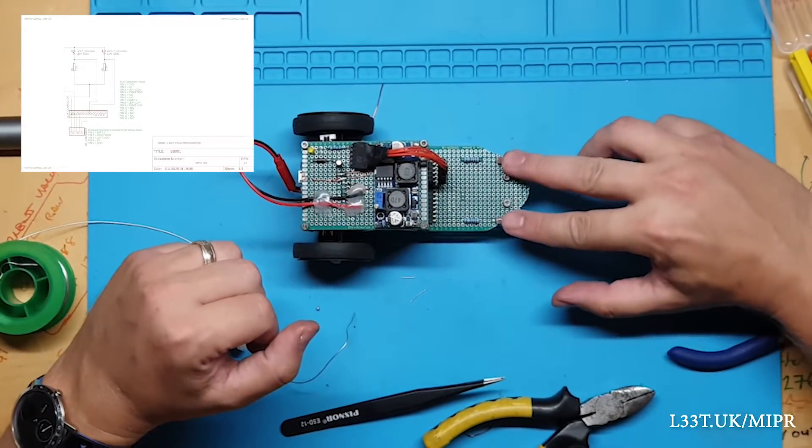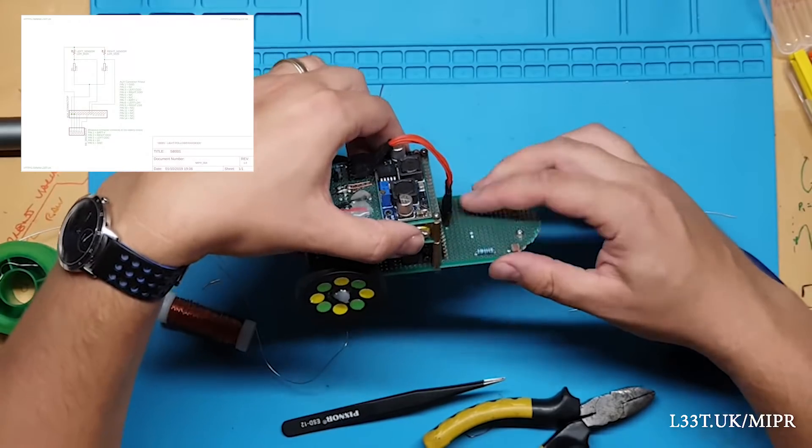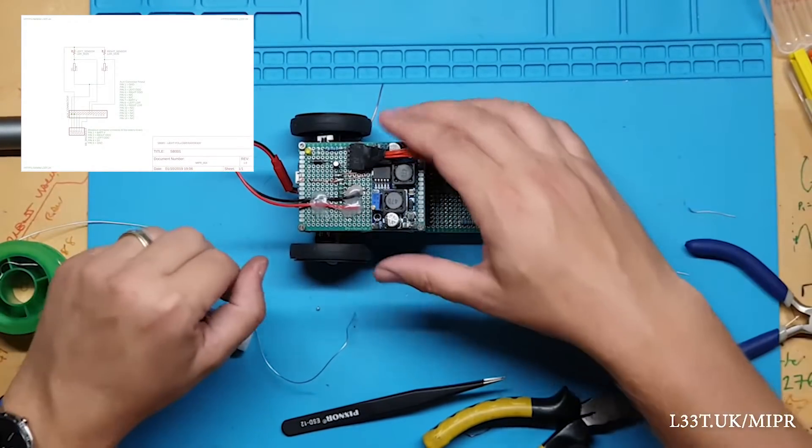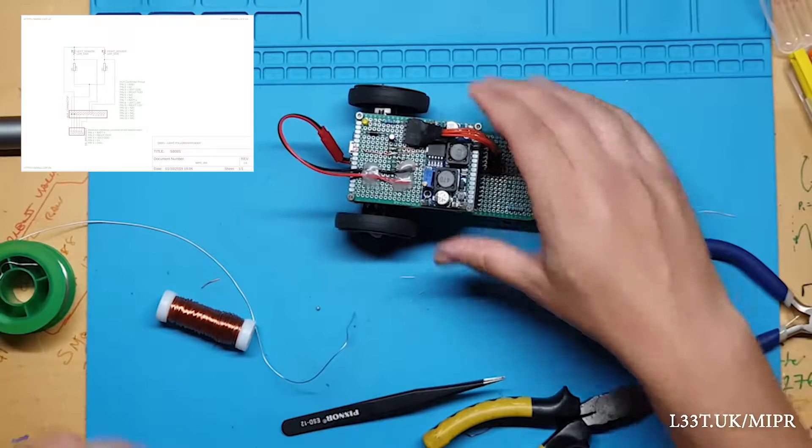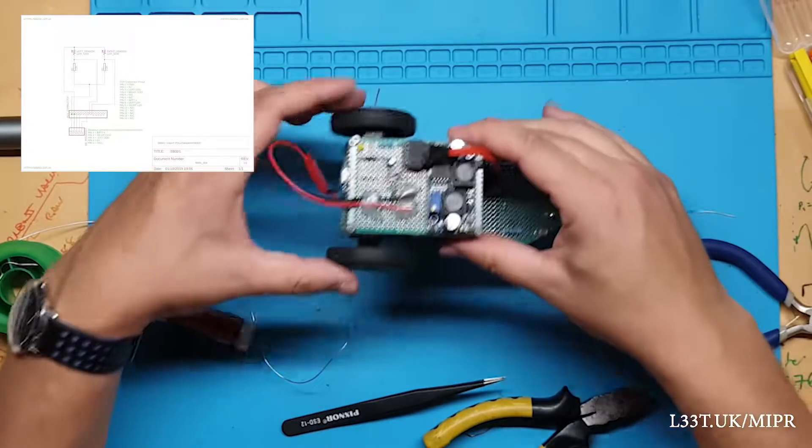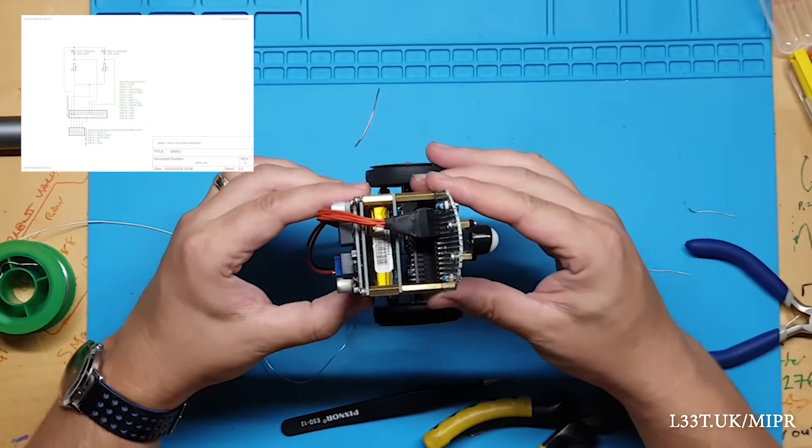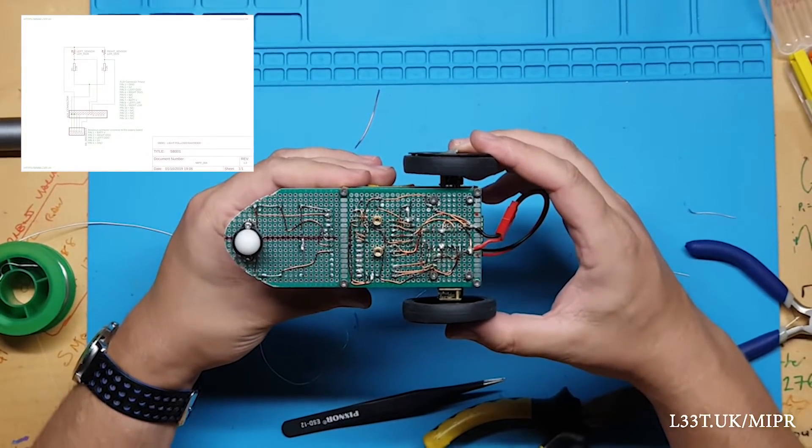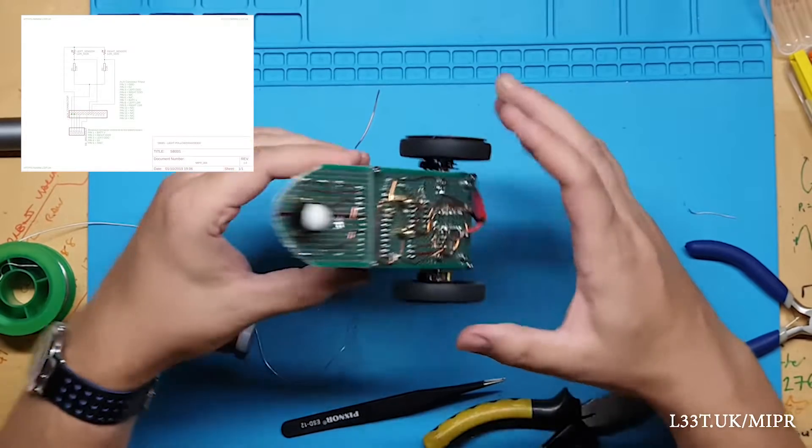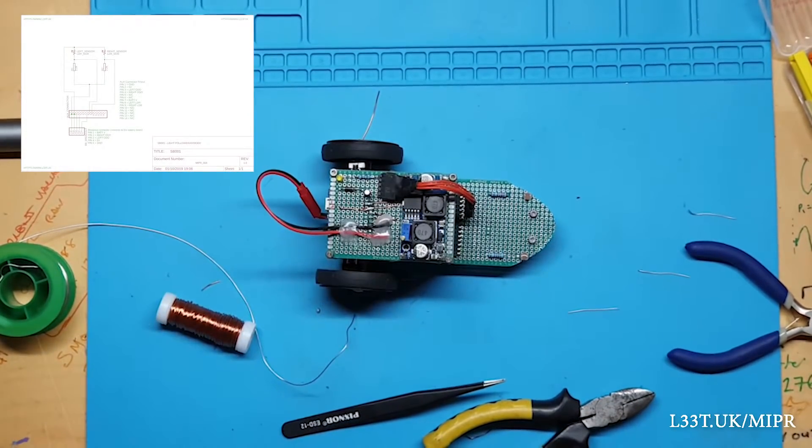If you want to see the robot in action check out the next video in this video series where I show the sensor board being used with on-screen telemetry. You can also change Mipper's mode of operation from Light Seeker to Light Avoider or just Remote Controlled. To see how to do this go to leet.uk/Mipper. Thank you for watching, I hope to see you next time.